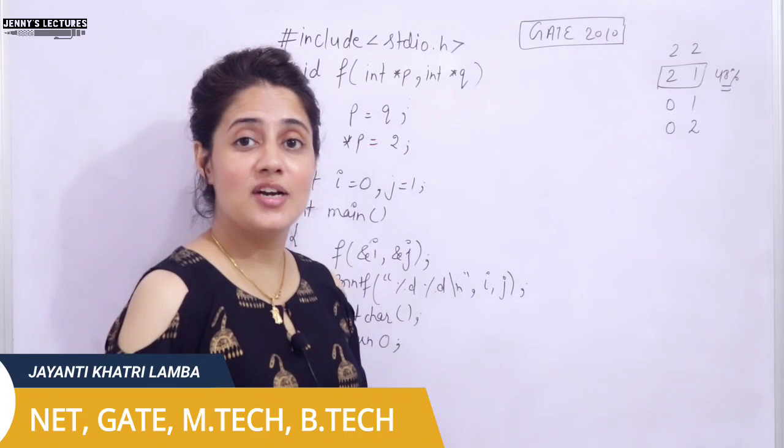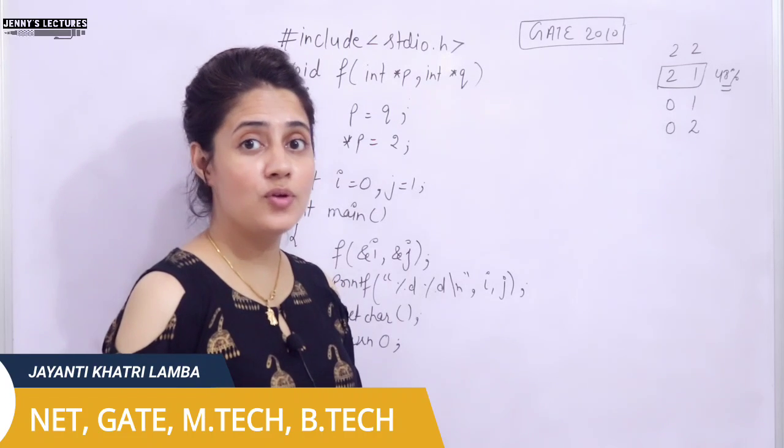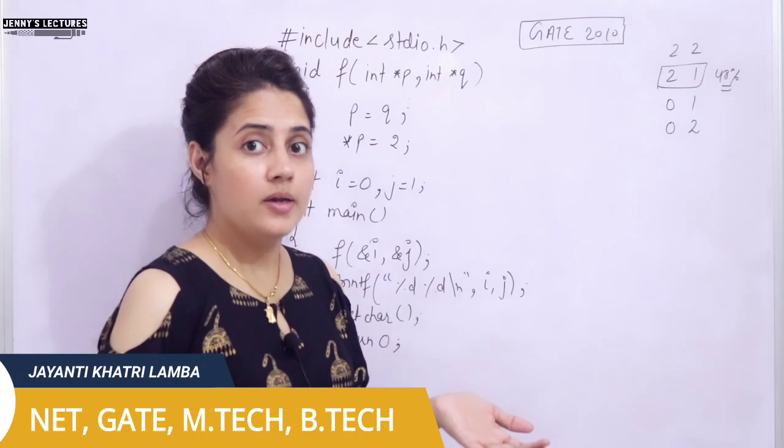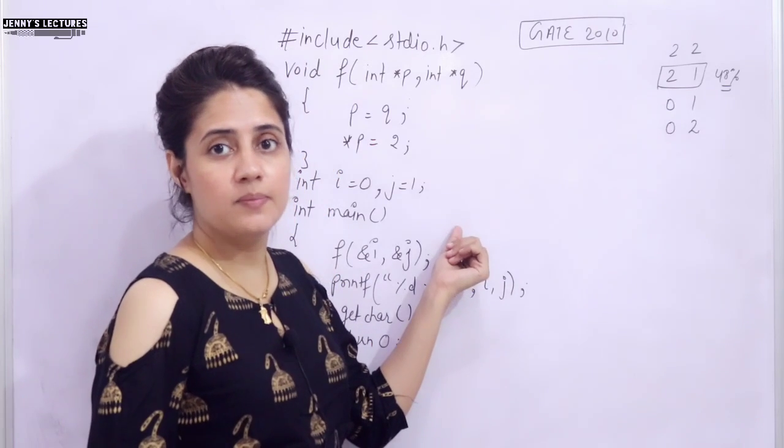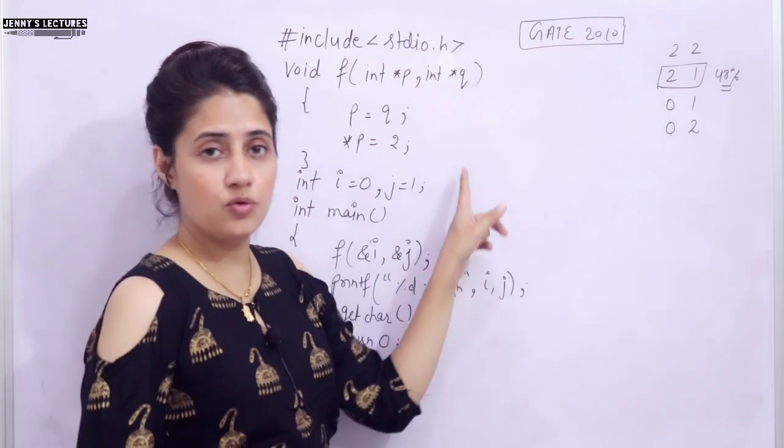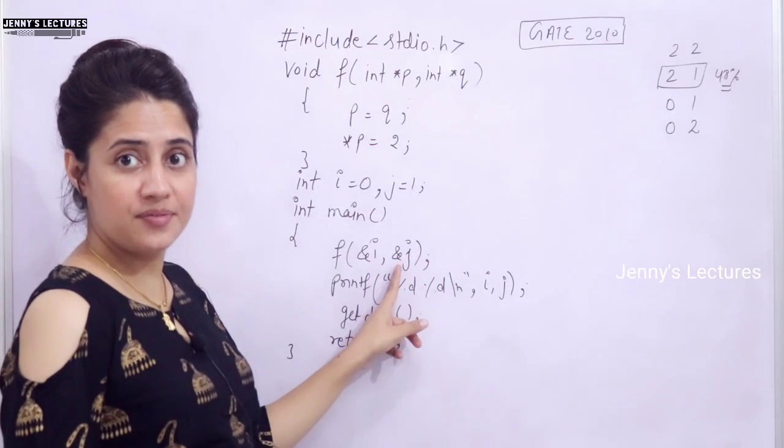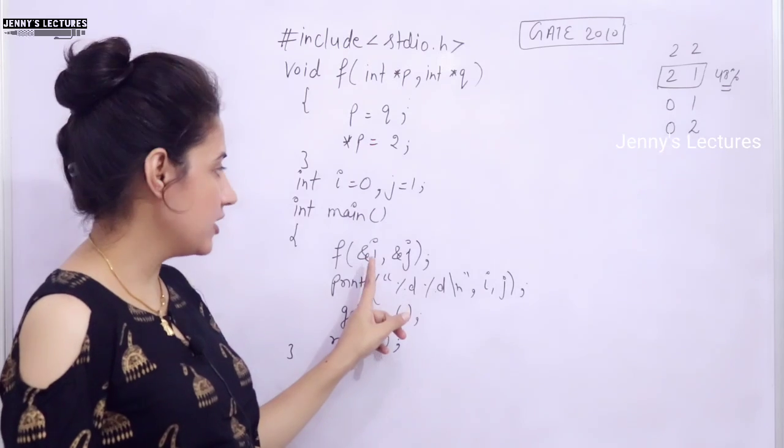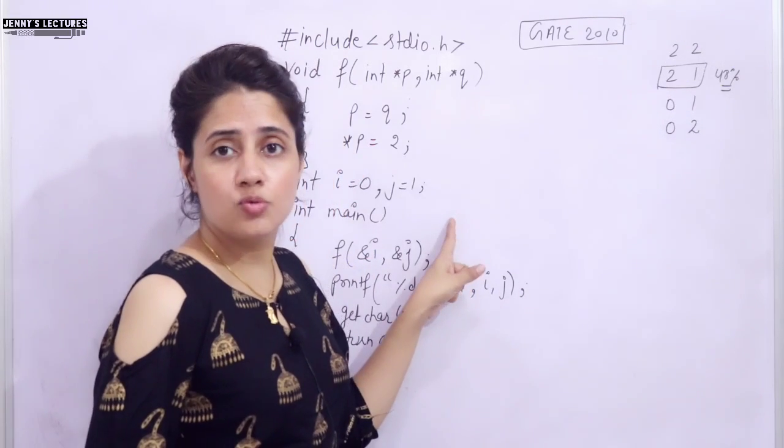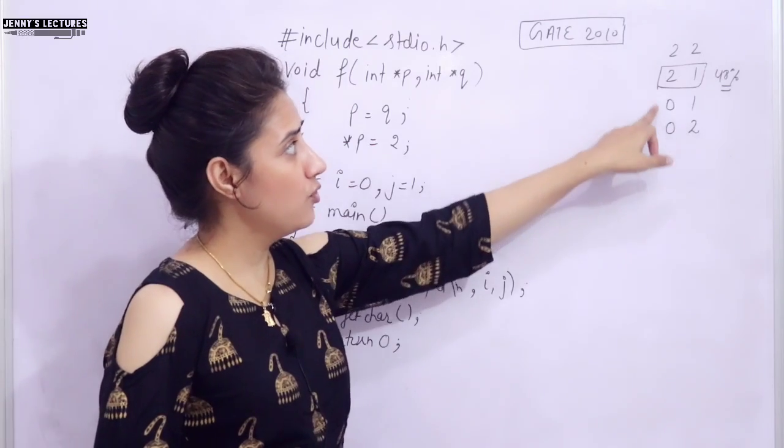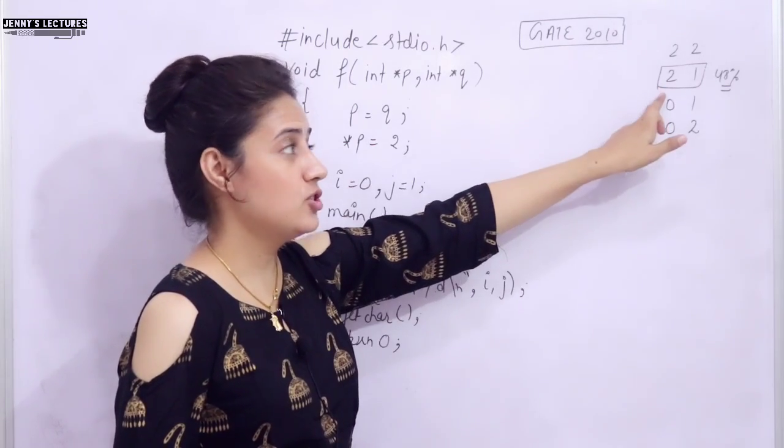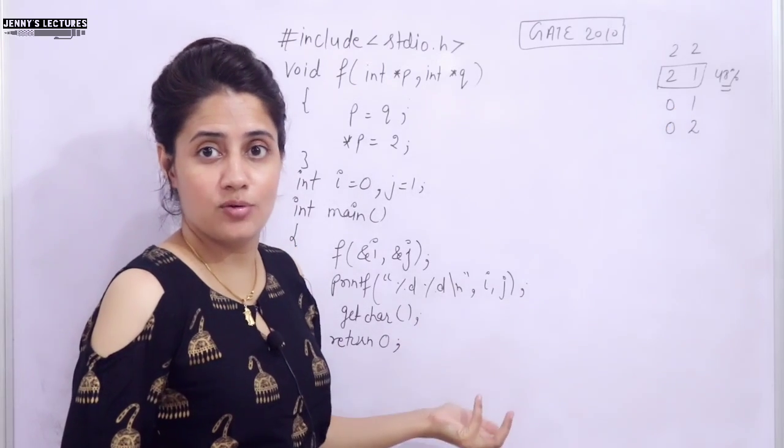In this series of learning C programming, we are discussing functions in C. In the previous video, we discussed how to return a pointer from a function. Now in this video, I have taken this example, a question that came in GATE 2010. This is a call by reference example. We are calling the function by passing the address. I have posted this question on my community, and these are four options. 48% students are saying that the answer is 2-1. So let us find out if you are saying correct or not.